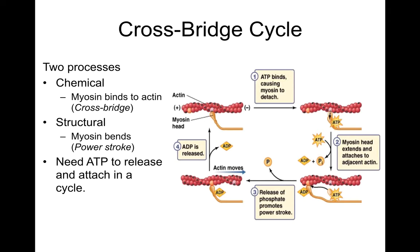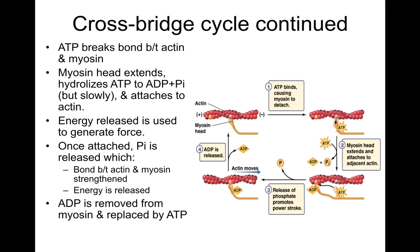That is why, when animals die, you have rigor mortis: everything is bound up and there's no ATP to release or relax the muscle. The ATP bond breaks the bond between the actin and the myosin. Then the myosin head extends, and the ATP is hydrolyzed to ADP and phosphate — it happens slowly, and the head attaches to the actin. The energy released from hydrolysis of ATP is what is used to generate force.